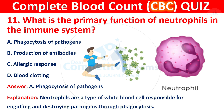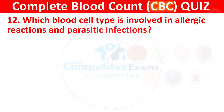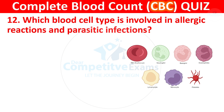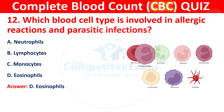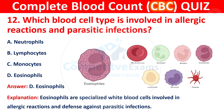Question 12: Which blood cell type is involved in allergic reactions and parasitic infections? Your options are Neutrophils, Lymphocytes, Monocytes, or Eosinophils. The correct answer is D, Eosinophils. Eosinophils are specialized white blood cells involved in allergic reactions and defense against parasitic infections.